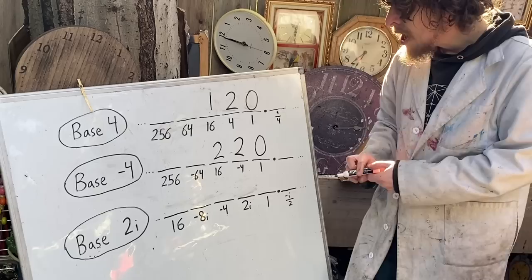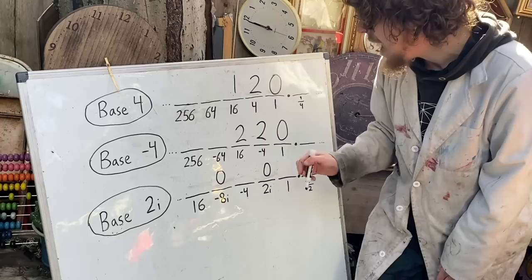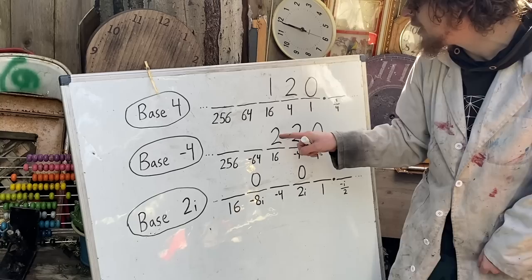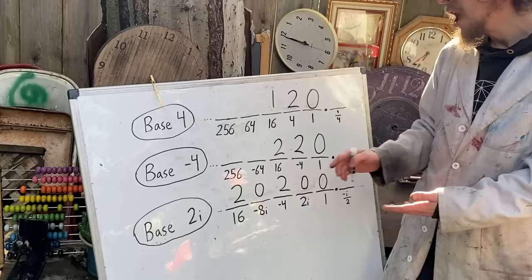So if we were to put zeros on the imaginary spots, and fill in numbers between 0 and 3, how base negative 4 would have written something, we can get a representation for an integer, like 2, 0, 2, 0, 0 is how base 2i writes 24.